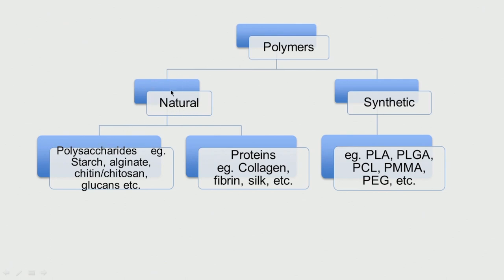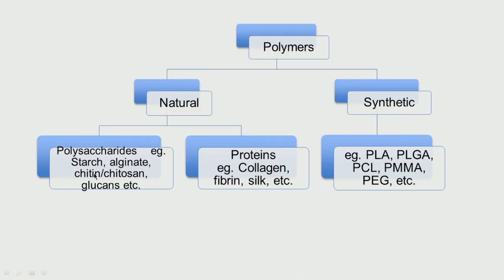We have two big groups: the polysaccharides and the proteins. Polysaccharides means we have saccharide groups like glucose or mannose connected in different architectures and different molecular weights — like starch, alginate, chitin, chitosan, glucans, and all these. They are polysaccharides — that is, saccharides means sugar.